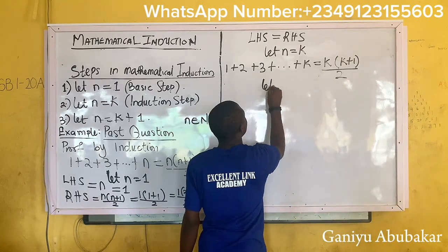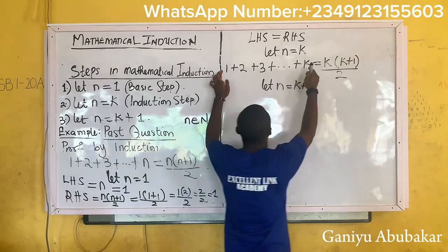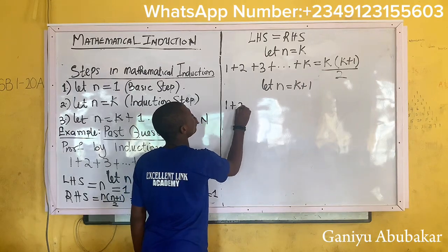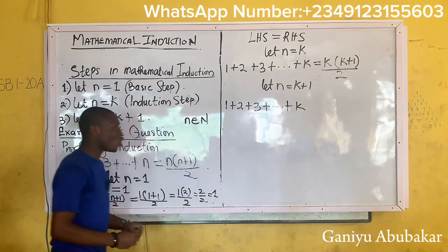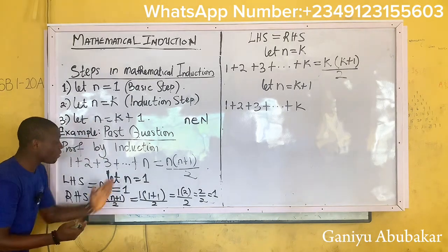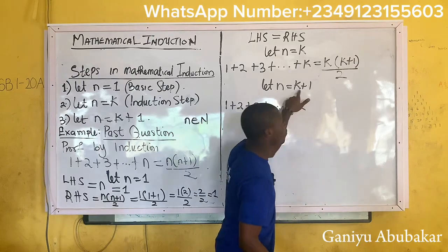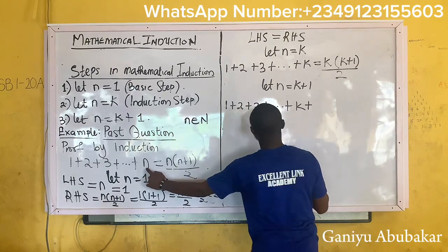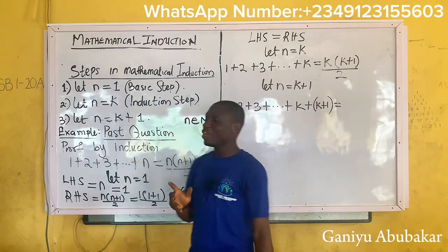Now let's do k plus one. We said for k plus one, repeat your assumption down first. So one plus two plus three plus dot dot dot plus k. Go back to your question — from here, repeat everything down and put n as k plus one, so you'll have that plus k plus one.